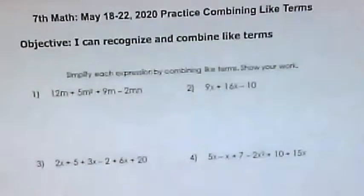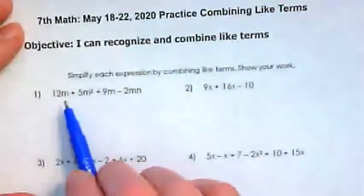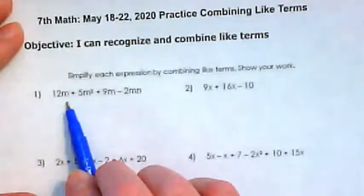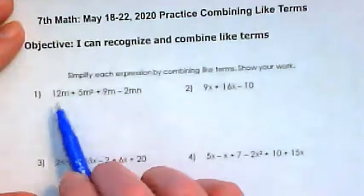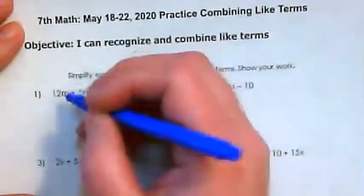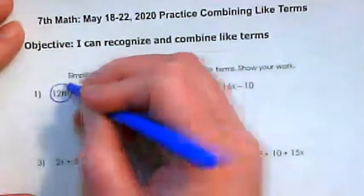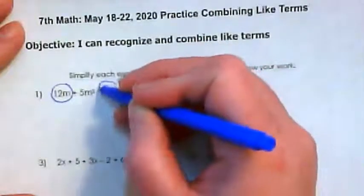I just want to remind you we talked last week about like terms. It's when you've got a variable that matches the same variable attached to potentially another number. So in this case, 12m is a like term with 9m.